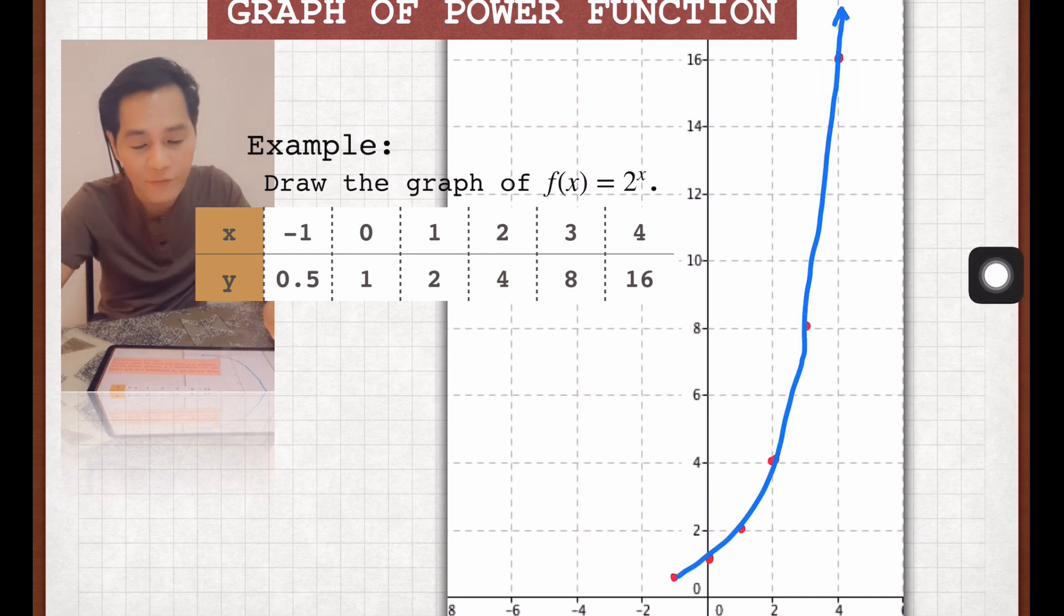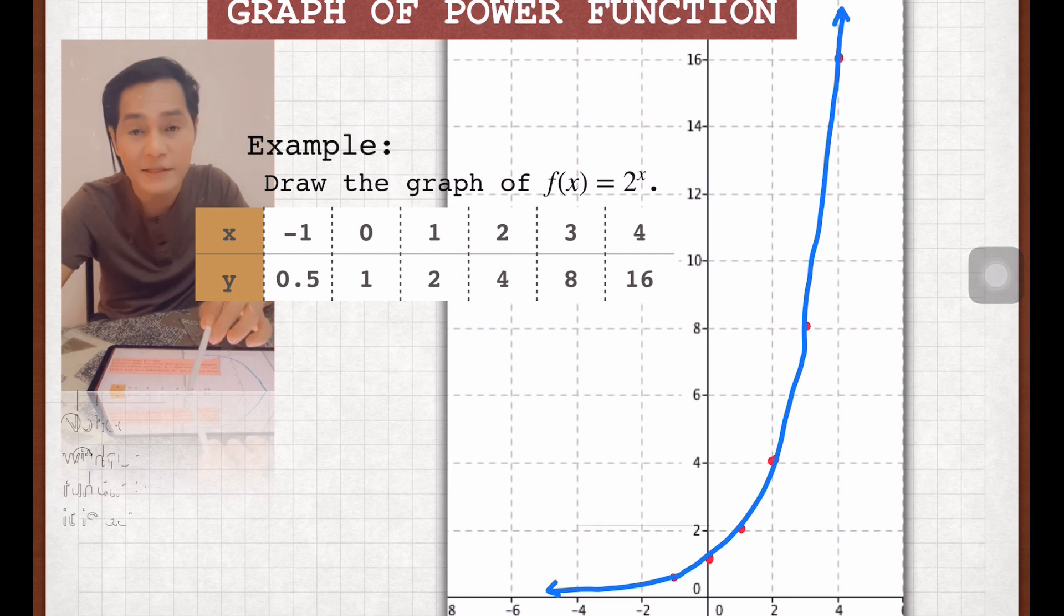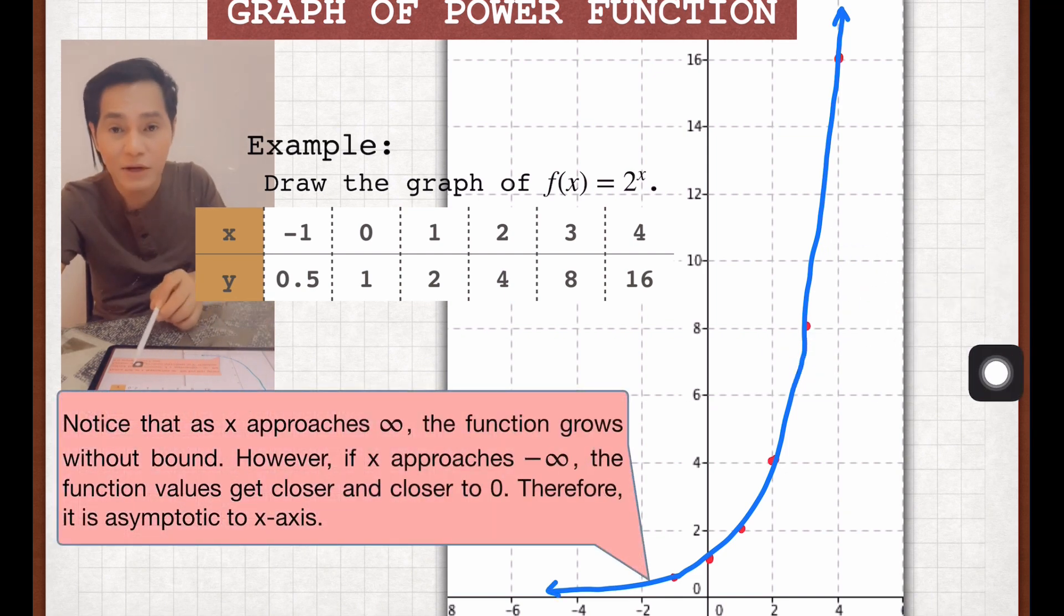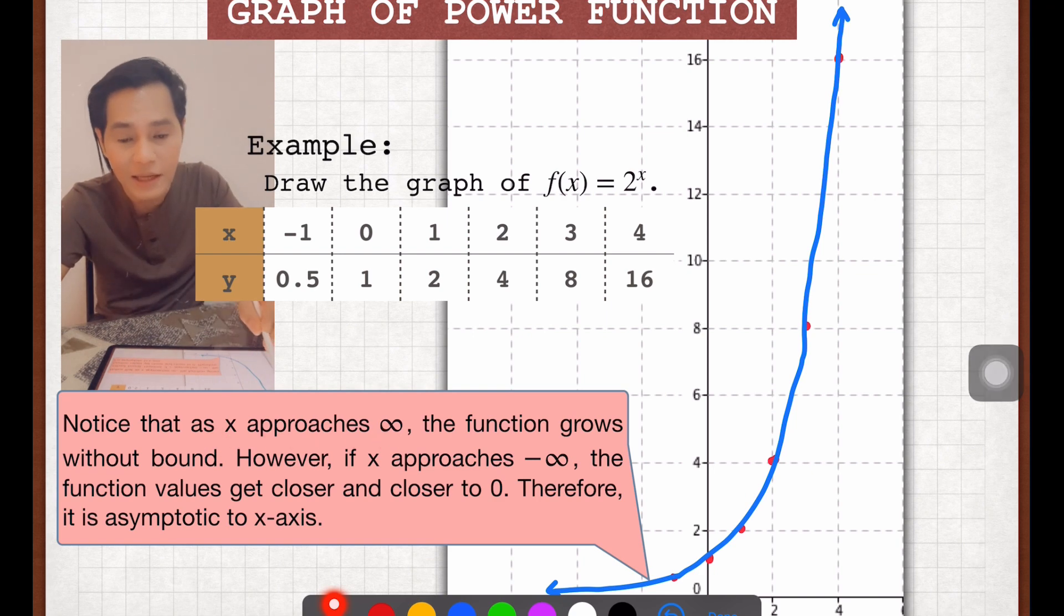So this is now the graph of the power function f(x) = 2^x. Take note of this: notice that as x approaches positive infinity, the function grows without bound, meaning it goes up and on and on.